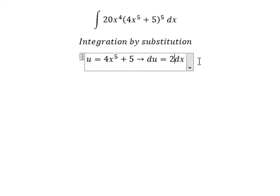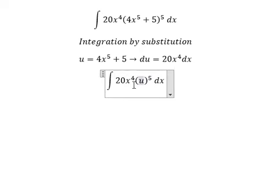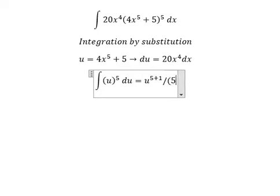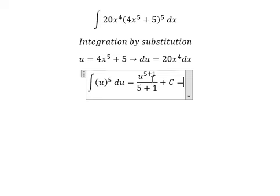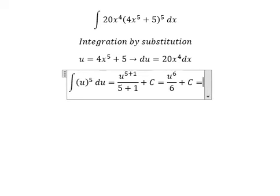We have 20. This one we change for u. 20x to the power of 4 dx, we change for du. And now we have the final answer, this one with u to the sixth over 6.